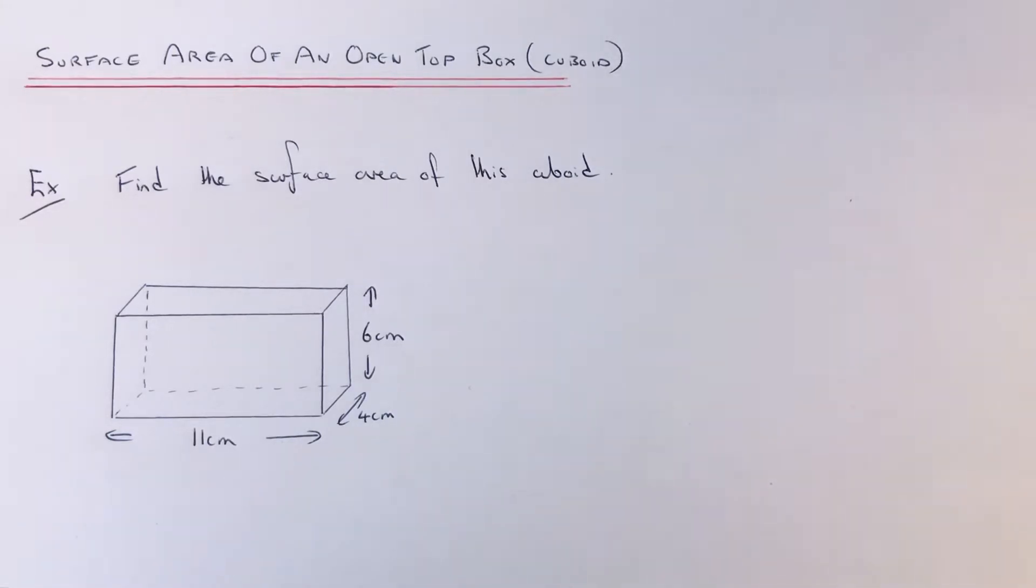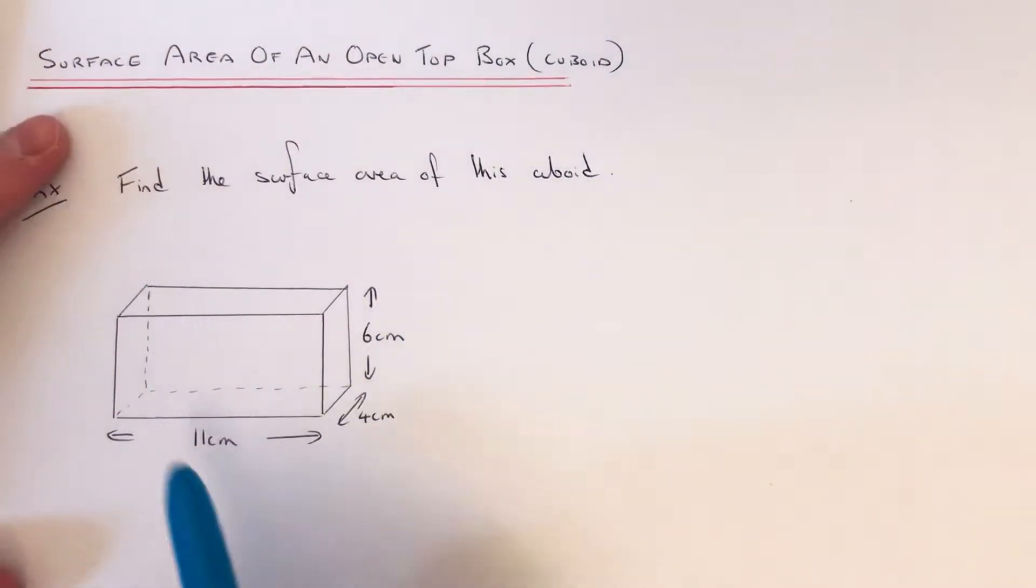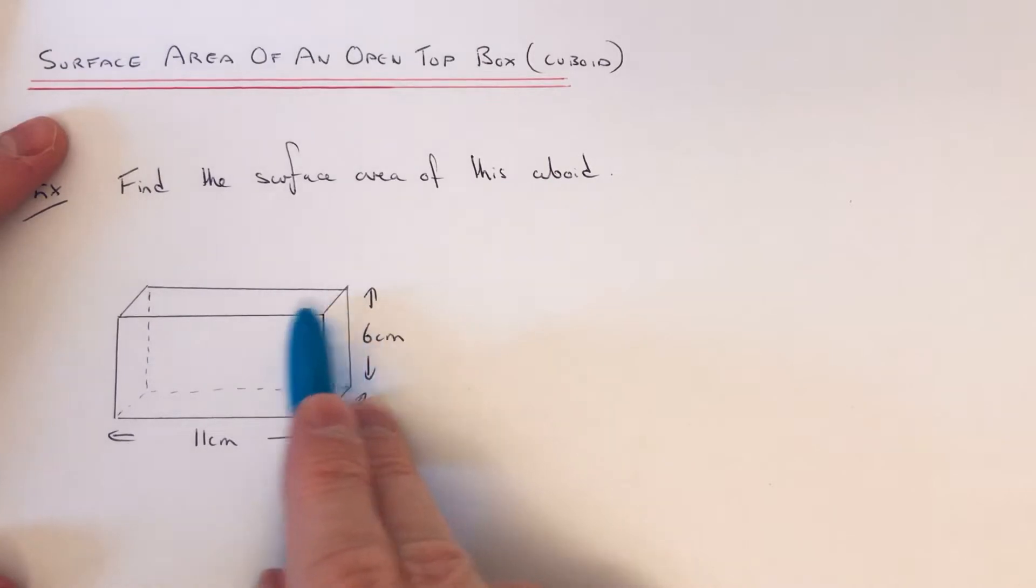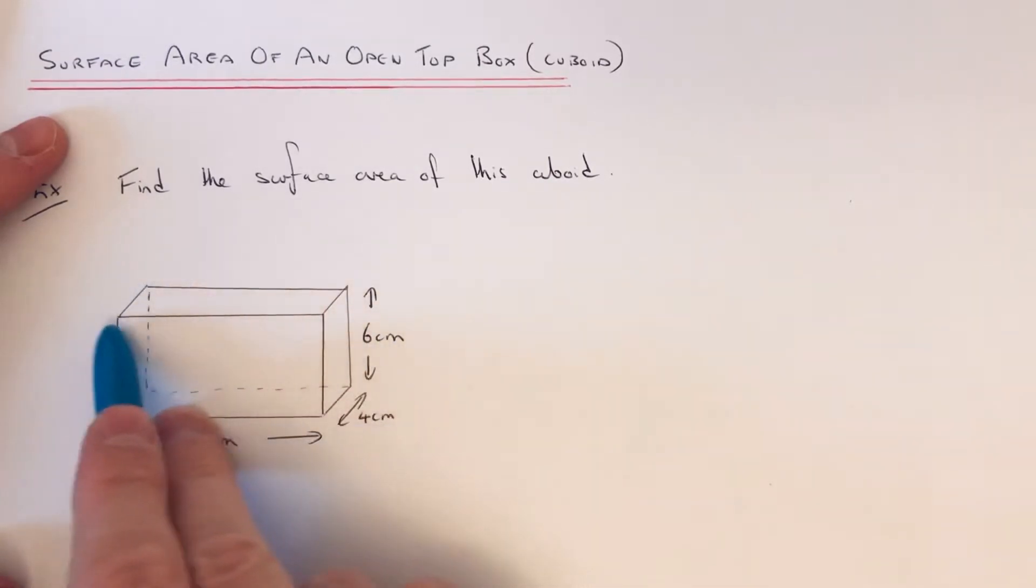Okay, and the shape we're going to work the surface area today is an open top box. So an open top box has five rectangular faces because the top face is missing, because the top of the box is open.